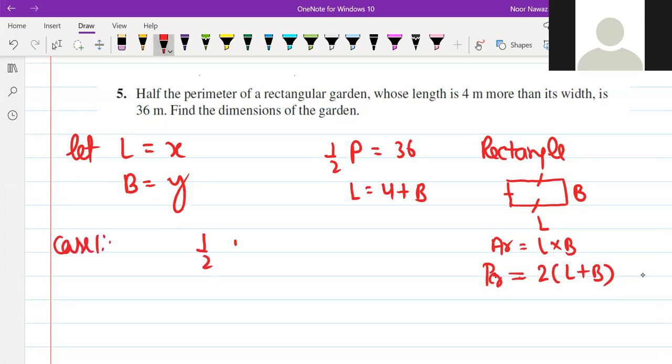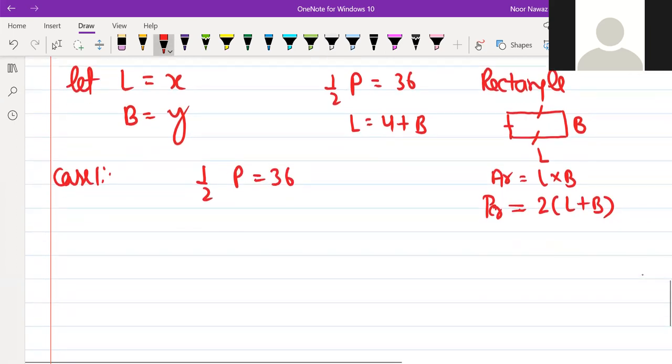Half the perimeter is 36. If you want to write it, it doesn't have to be read. What will happen to us? Perimeter is twice length plus breadth. Now length x and y. And 4 plus x is not equal, is equals to 36.